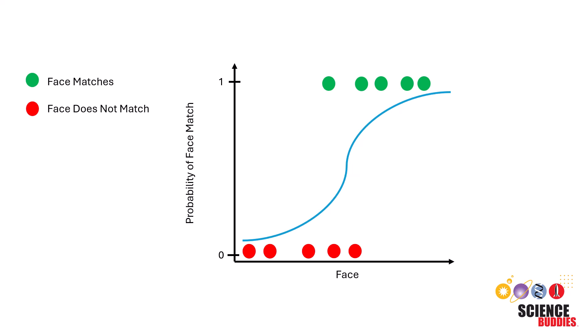To see the probability of each data point matching the face, you choose the point where you want to check and go directly up until it reaches the activation function. Then you go directly to the left. And here, it looks like there is a 0.2 or 20% chance that this face matches the one in the system.